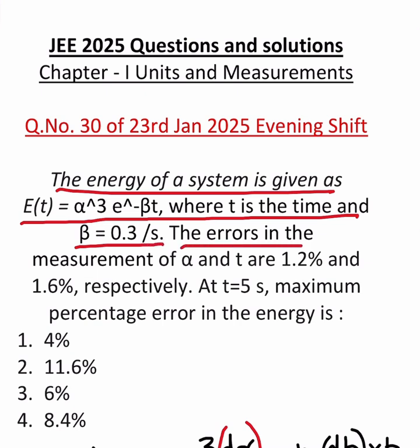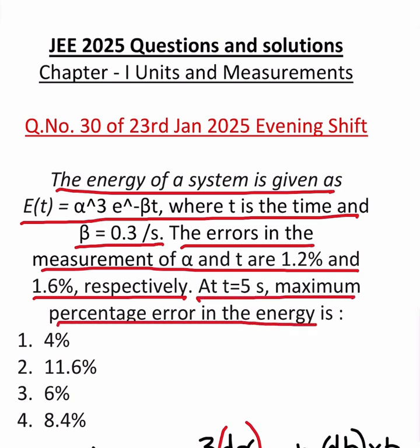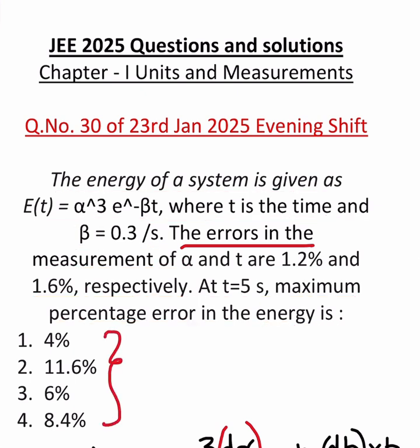The errors in the measurement of alpha and t are 1.2 percent and 1.6 percent respectively. At t equals 5 seconds, maximum percentage error in the energy is, and they have given four options and we have to select from those options.